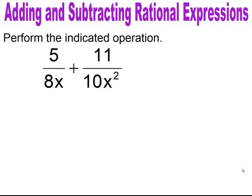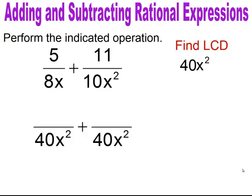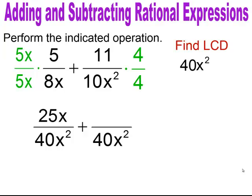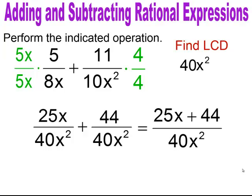Pause and try. The common denominator is 40x squared. For the first rational expression, multiply by 5x to get 40x squared, giving 25x in the numerator. For the second rational expression, multiply by 4 to get 40x squared, giving 44 as the numerator. Adding the numerators gives 25x plus 44 over 40x squared. Nothing simplifies, so that is the answer.